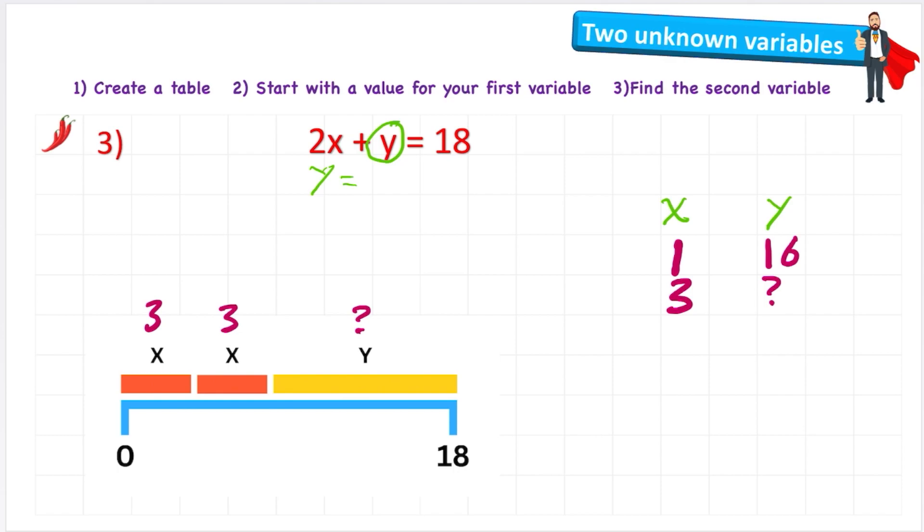And y equals the inverse of the operation at the moment, which is addition, so it's going to be subtraction now. So y = 18 - 2x. Well, in this case x has a value of 3. So it's y = 18 - 2 × 3. BODMAS tells me to do my multiplication first.